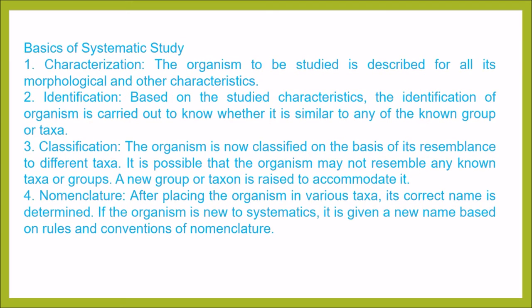The basic things studied in systematics are: characterization, identification, classification, and nomenclature. In characterization, the organism to be studied is described for all its morphological and other characteristics. In identification, based on the studied characteristics, the organism is compared to known groups of taxa. In classification, it is classified on the basis of its resemblance to different taxa; if it does not resemble any known taxa, a new group of taxa is raised to accommodate it. In nomenclature, after placing the organism in various taxa, its correct name is determined; if it is new to systematics, it is given a new name based on the rules and conventions of nomenclature.